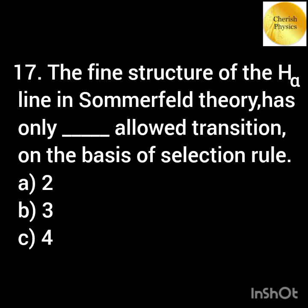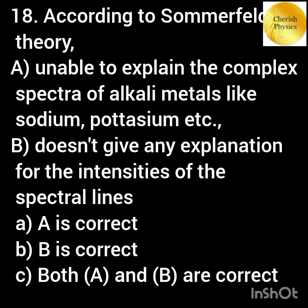The fine structure of the H-alpha line in Sommerfeld theory has only dash allowed transitions on the basis of the selection rule. Which of the following is correct according to Sommerfeld theory?